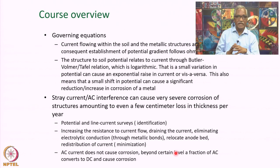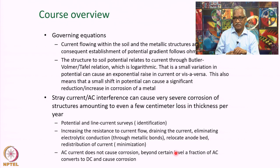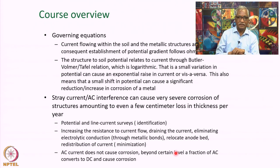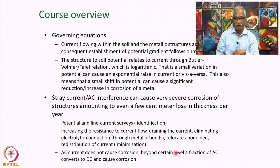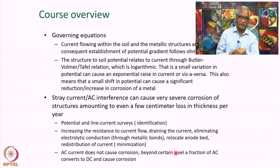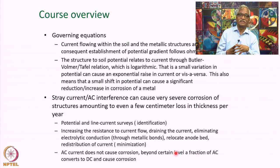Stray current and AC interference are other important aspects of cathodic protection. These two factors can affect the corrosion of structures very significantly. Stray current can cause as much as a few centimeters loss in thickness per year. AC current does not affect corrosion as significantly as DC current; however, beyond a certain level, a part of the AC current is converted to DC current by a phenomenon called Faradaic rectification, which can induce corrosion.